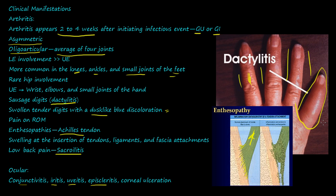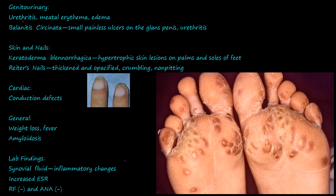The genitourinary component involves inflammation of the urethra, edema, meatal erythema, and balanitis circinata — small, painless ulcers located on the glans of the penis — as well as urethritis.